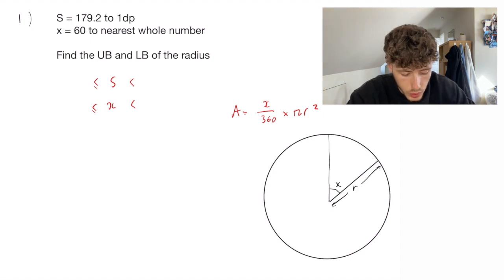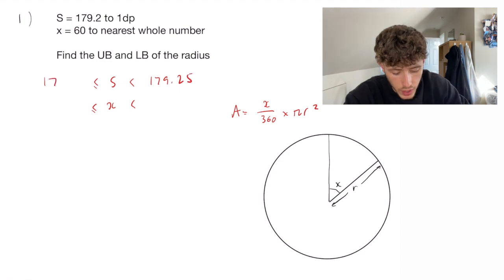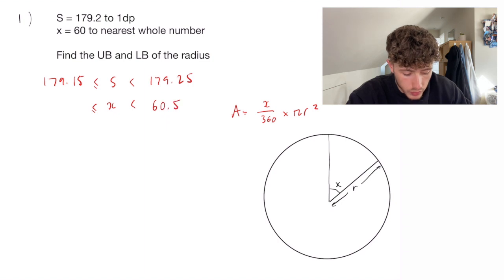So 179.2 to one decimal place is going to be 179.25 and 179.15. X is going to be 60.5 and 59.5.